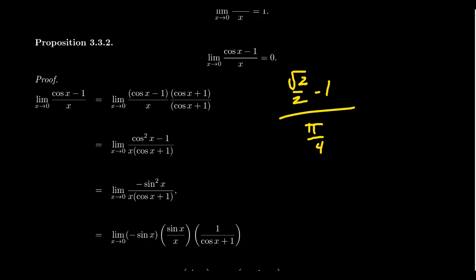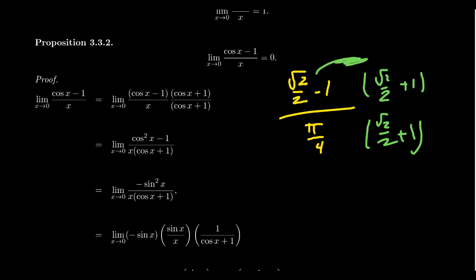If this was our fraction and you were asked to rationalize the numerator, your process would be to take the numerator, which is the square root of 2 over 2 minus 1, and multiply by the conjugate with the sign switched. As you FOIL out the numerator, you're going to end up with square root of 2 over 2 times itself, giving you 1 half. Then you get a minus root 2 over 2 and a plus root 2 over 2, which cancel, leaving you with 1 half minus 1, which equals negative 1 half.